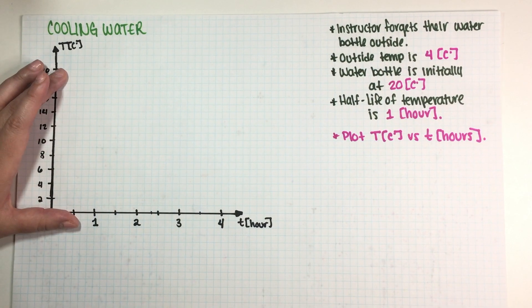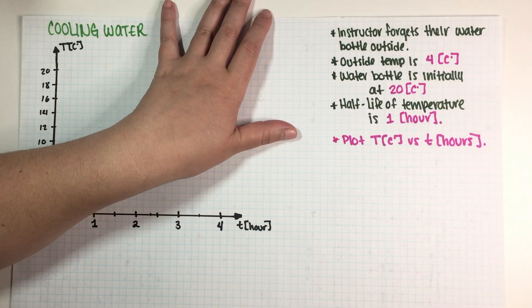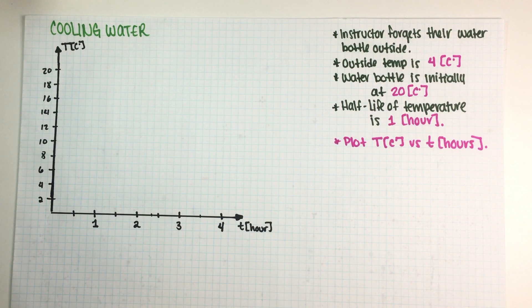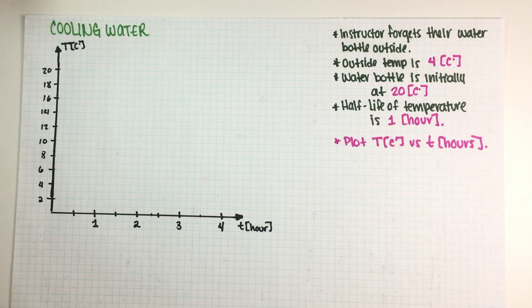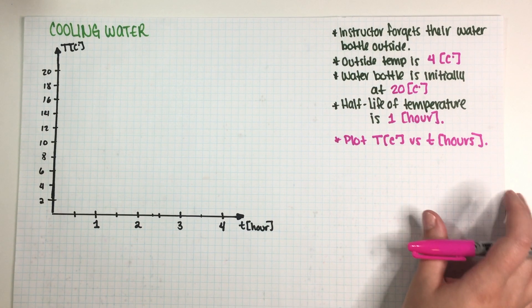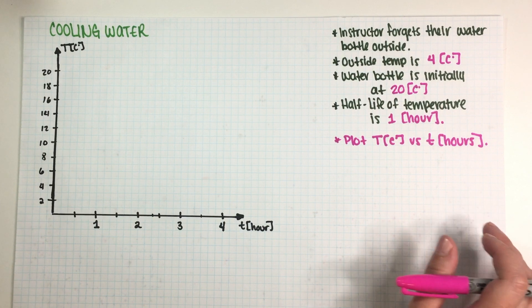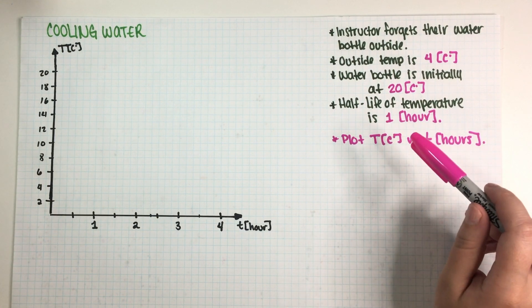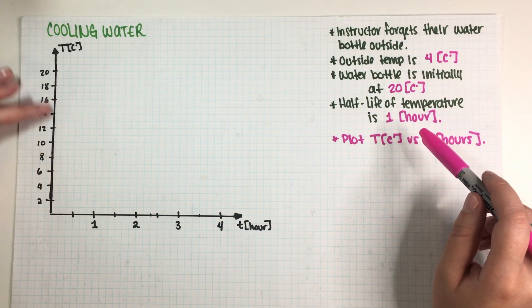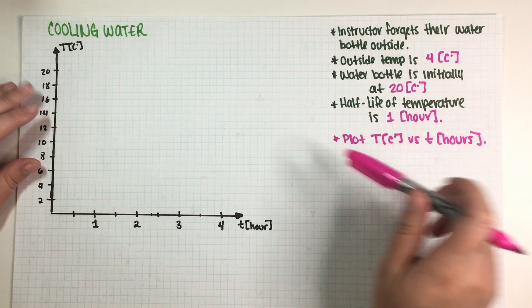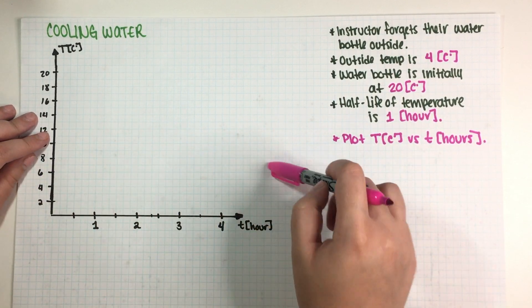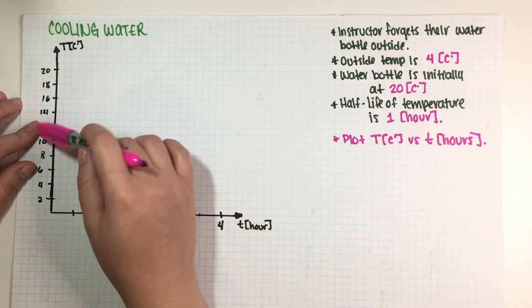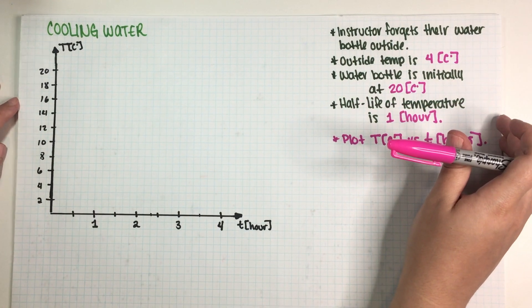As you can see, I have an empty graph over here and I have the basic information. So this is just a plotting exercise which is very helpful at the beginning because you do need to know what we consider a complete answer to a problem. There are at least three different things that we are always gonna ask you whenever we give you enough information.